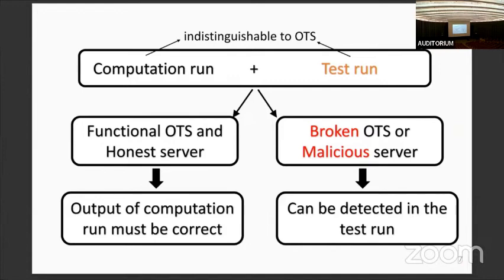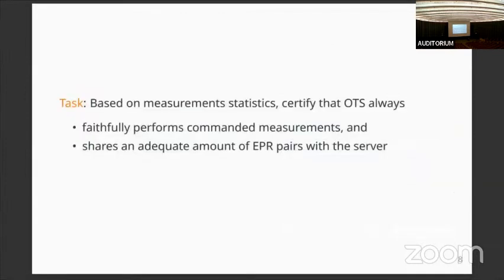You know they are doing the commanded things. However, if the off-the-shelf device and the server cannot pass the test run, then you know either the off-the-shelf device is broken or the server is malicious, so you can detect the malicious behavior. Our task boils down to designing a protocol that, based on the measurement statistics, verifies that the off-the-shelf device indeed faithfully performs commanded measurements and shares an adequate amount of EPR pairs with the quantum server.